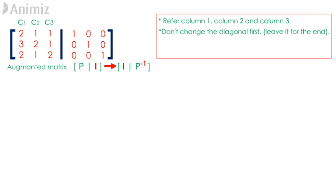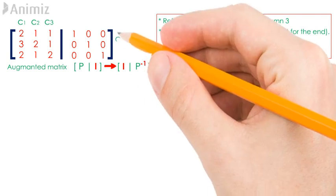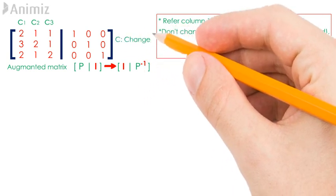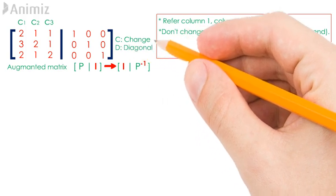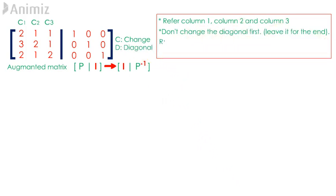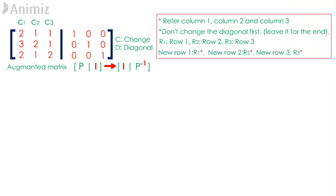Here are a few things to take note of. The letter C is used to denote the element we are changing, whereas the letter D is used to denote the diagonal element. R1 represents row 1, R2 represents row 2, and R3 represents row 3. New row 1, new row 2, and new row 3 are written as R1*, R2*, and R3* with an asterisk symbol.